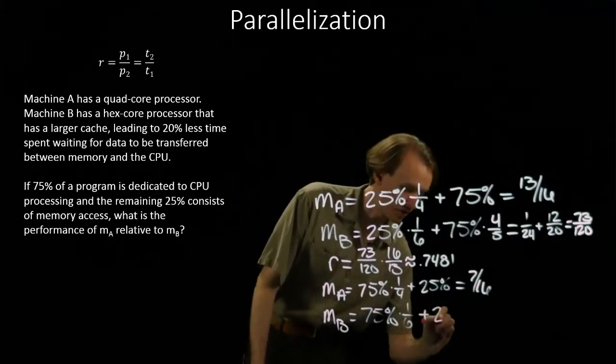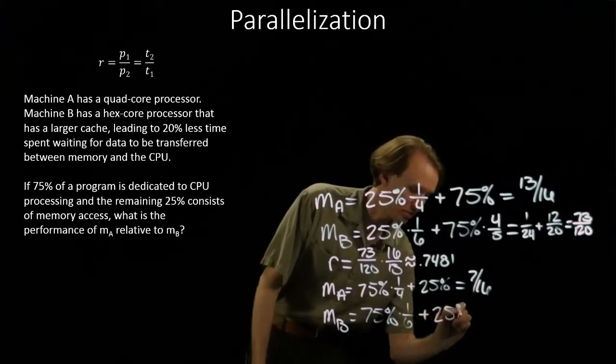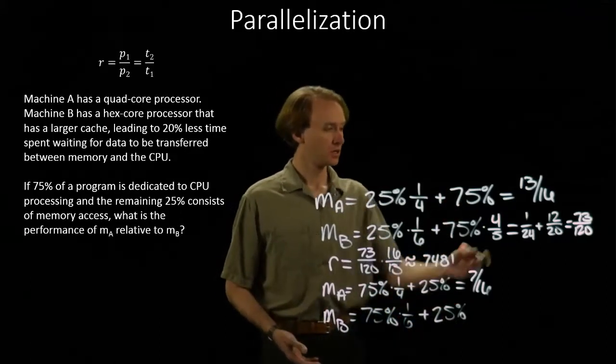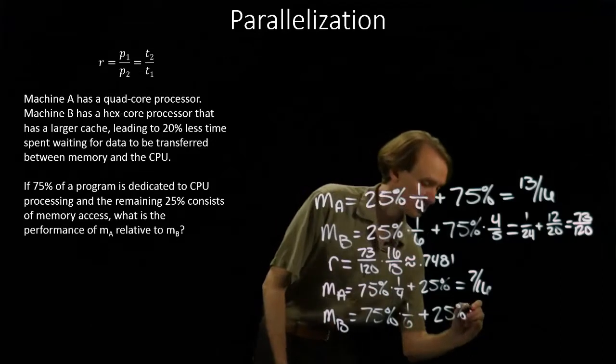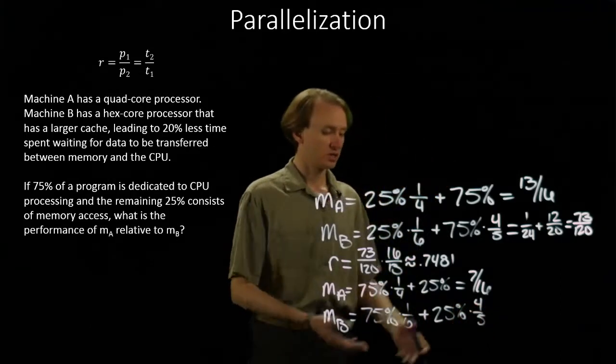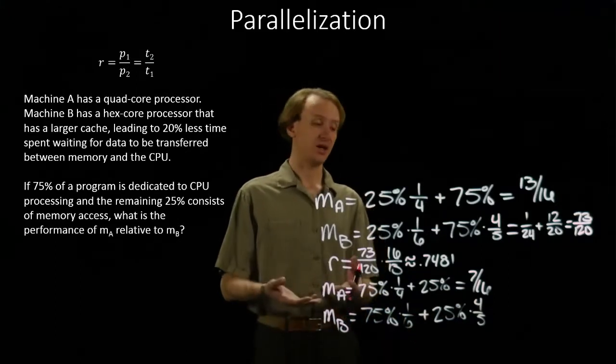The other twenty-five percent of the instructions are memory instructions. And again, machine B has an advantage over machine A here. So again, it's going to take four-fifths as much time to complete those instructions on machine B as it did on machine A.